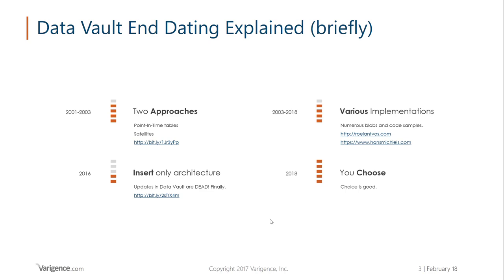There are a number of articles out there around how to implement end dating and various different flavors of it. On Roland Voss's website and Hans Mikkel's website there are a couple of articles that are fundamentally the same but slightly different. The last one was again from Dan Linstead — "Updates in Data Vault" — where he says that if you want to be prepared for the future, you shouldn't really have any updates, and end dating is a form of updates because you load the data and then go back into the satellite and insert updates.